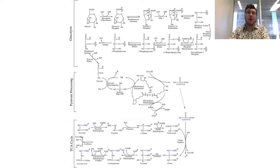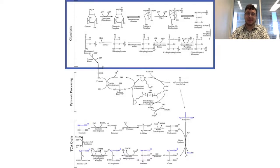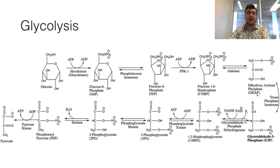We're going to be talking about one of the essential metabolic pathways: glycolysis. Glycolysis is a series of 10 catabolic reactions, most of which can go in the reverse direction. It is an essential pathway in nearly every organism.